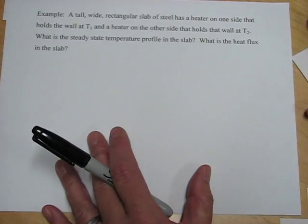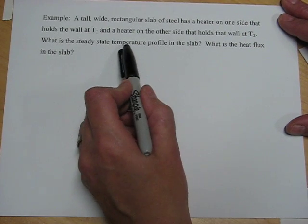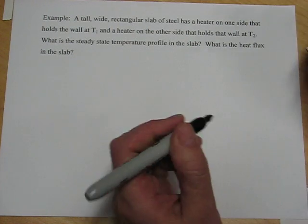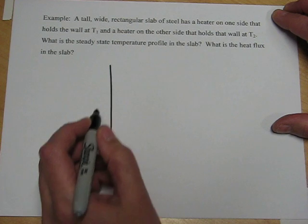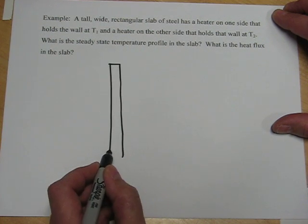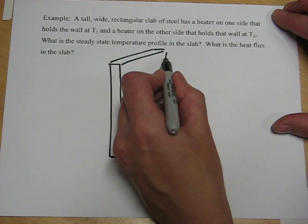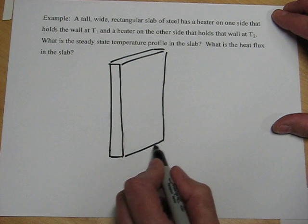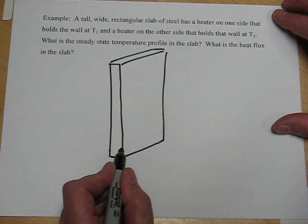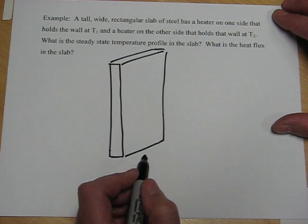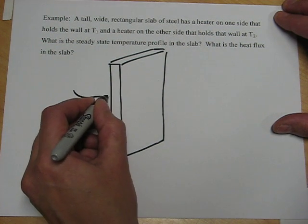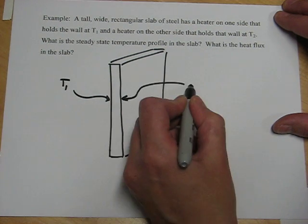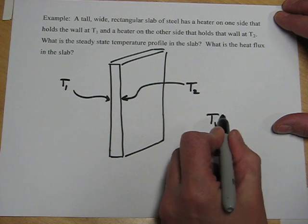So returning to our problem, we've now determined that because it's asking for the temperature profile, we're doing a microscopic problem. So now it's time to sketch the problem. And we have a tall, wide slab. So I'll try to draw it here in 3D. So it's very tall, it's very wide, and its thickness is of some finite amount. The temperature at this left wall is given as T1. And the temperature at the right wall is given as T2. And we'll take T1 greater than T2.